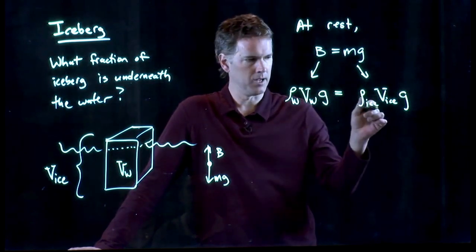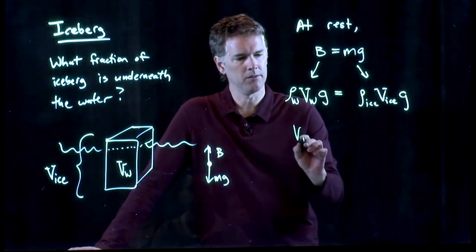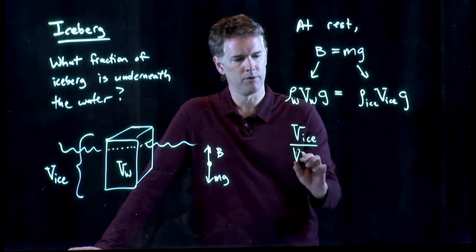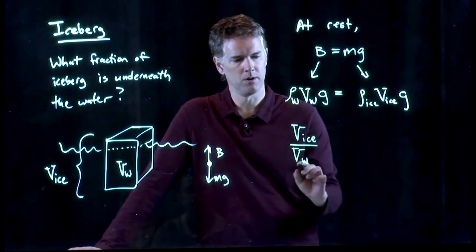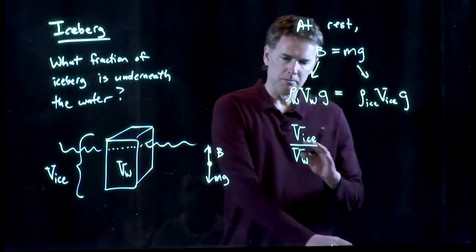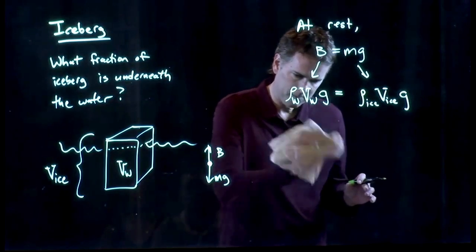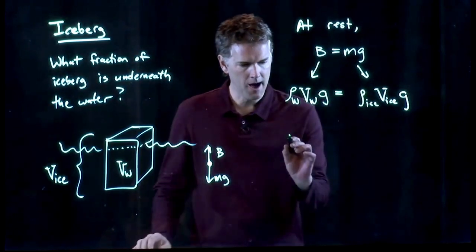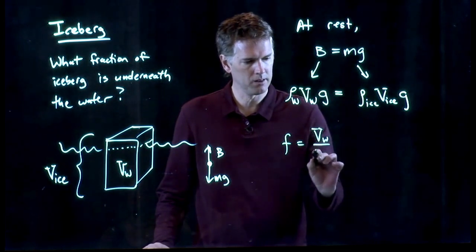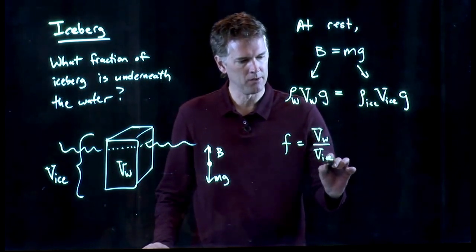Gs cancel out on both sides. And we can write this volume of the ice over volume of the water. Actually, we want the fraction beneath. Let's do it the other way. The fraction beneath f is going to be the volume of what's underneath divided by the total volume.